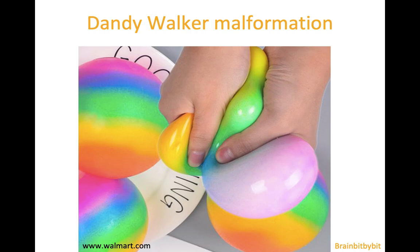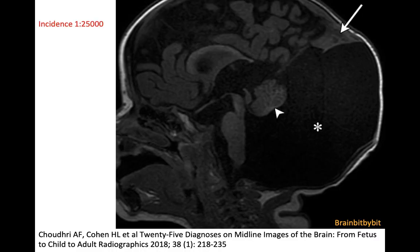I will show images of Dandy-Walker malformation, which is the most common malformation of the posterior fossa according to the textbooks. The incidence is about 1 in 25,000, indicating how uncommon posterior fossa malformations are.